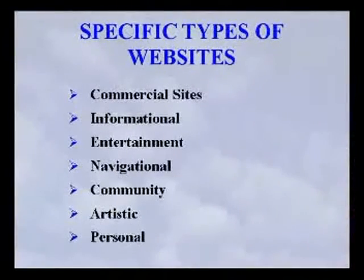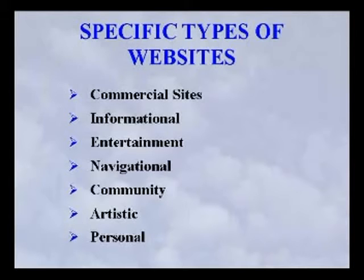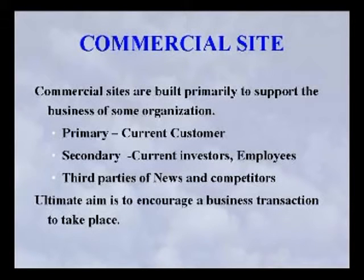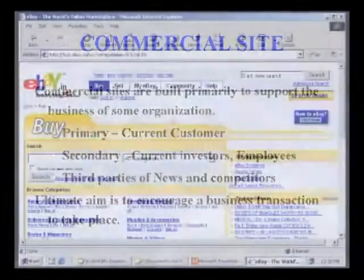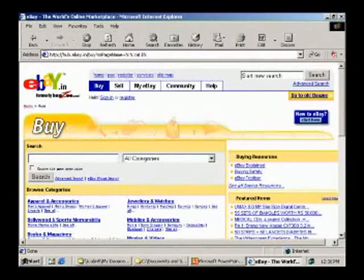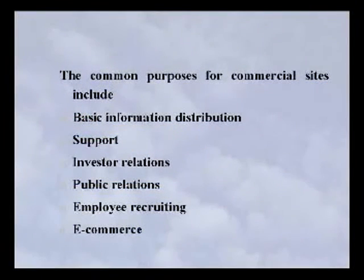Now we are going to see about the specific types of websites, categorized as: commercial websites, entertainment websites, navigational websites, community websites, artistic websites, and personal websites. Commercial sites are built primarily to support the business of some organization; their primary audience is potential and current customers. Common purposes include basic information distribution, support, investor relations, public relations, employee recruiting, and e-commerce.